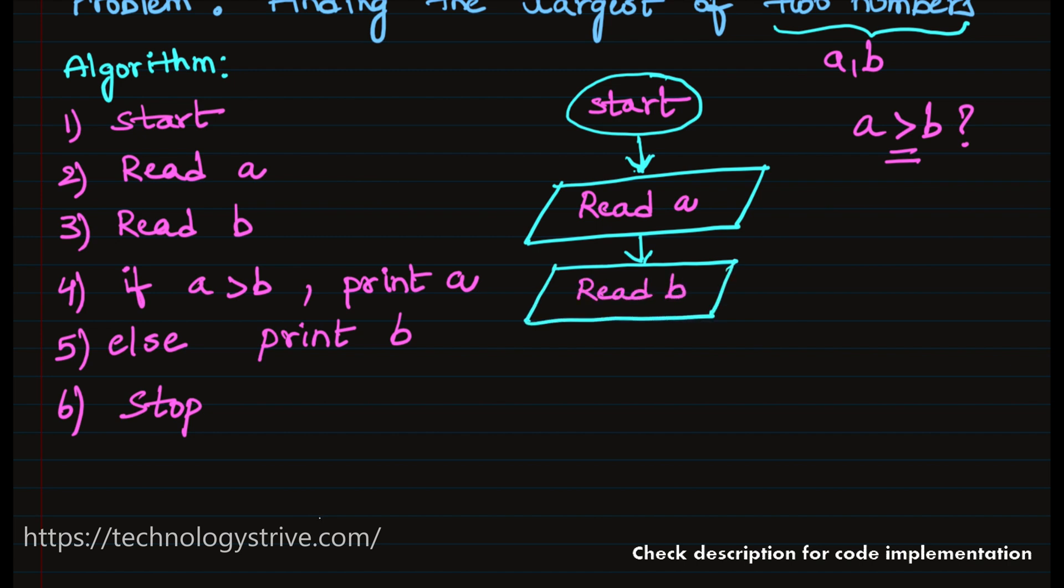Once I have the two numbers, what do I have to do? I have to check whether a greater than b or not. Means I have to take the decision using this operator. If a greater than b - whenever there is a decision line, obviously there will be more than one outcome. So if a is greater, it means either it is yes or no. In case of yes, what we have to do? In case of no, what we have to do? This is for yes and this is for no.